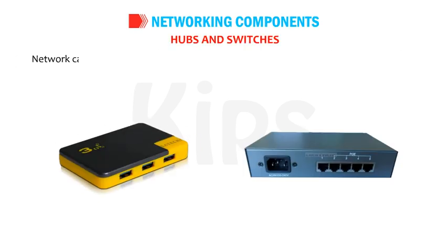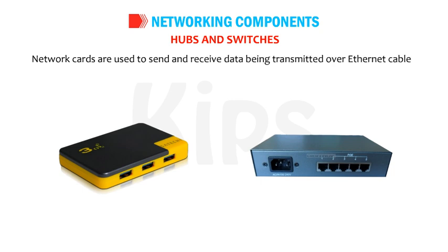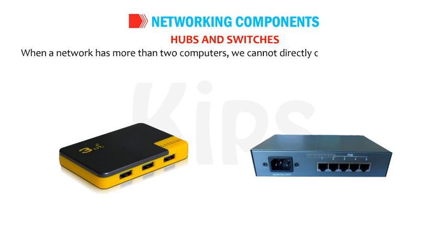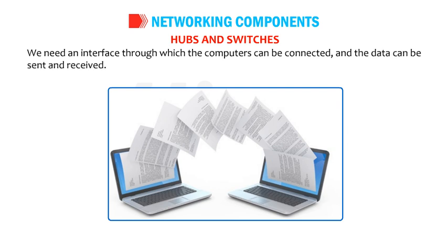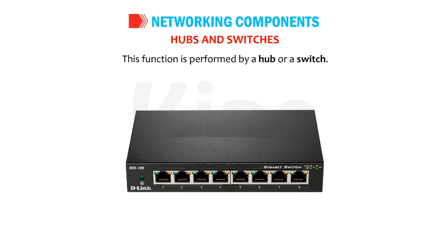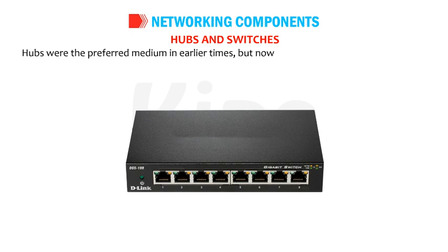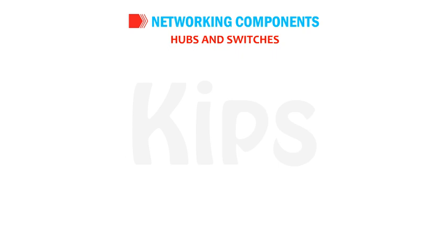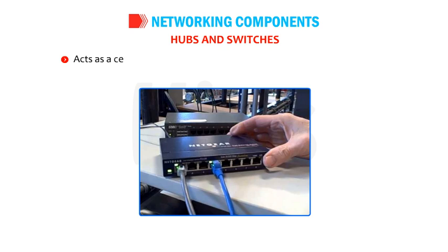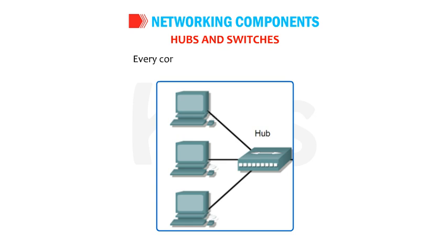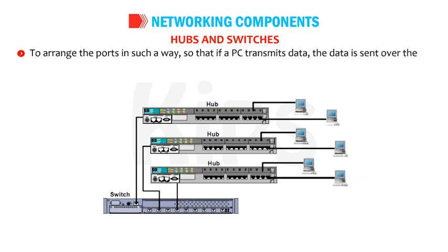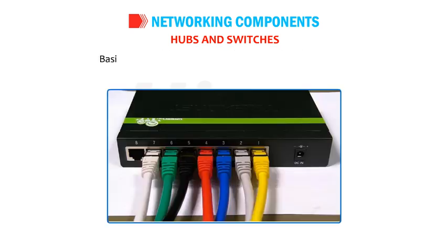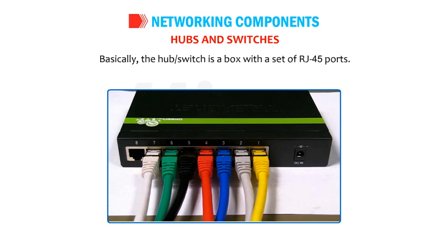Hubs and switches — network cards are used to send and receive data transmitted over Ethernet cables. When a network has more than two computers, we cannot directly connect all computers together; we need an interface through which computers can be connected and data can be sent and received. This function is performed by a hub or a switch. Hubs were preferred in earlier times, but now switches are used because of their better efficiency. A hub or switch acts as a central point of connection; every computer plugs into it, and data transmitted by a PC is sent to other computers through their network cards. The hub or switch is essentially a box with a set of RJ45 ports, and each computer is connected to it via Ethernet cable.